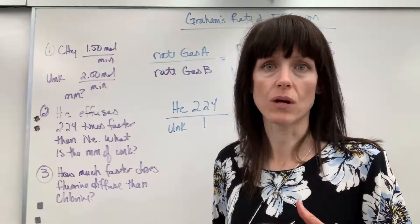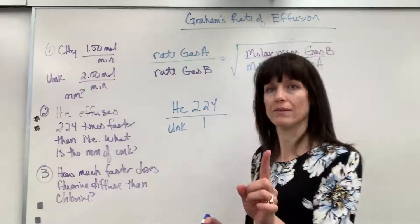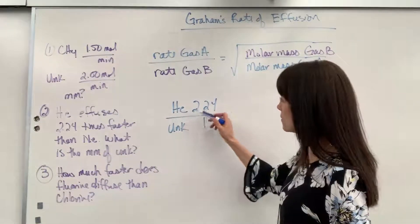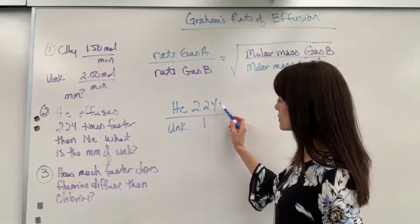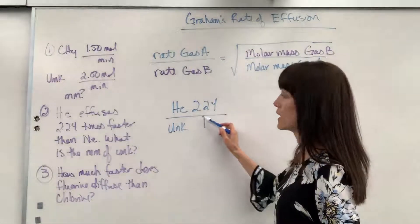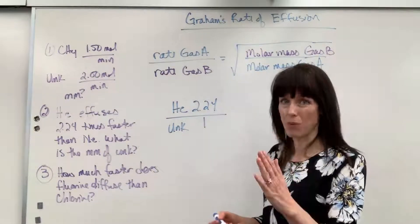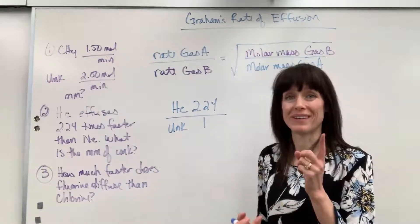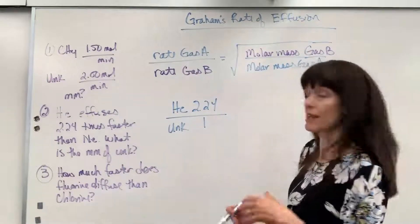So, if you're ever given just one number, faster or slower, you're comparing it to one. That's what's inherent. You're comparing it to one. So, this helium effuses 2.24 times faster than the unknown, which means the unknown is our reference of 1. So, there you have it. You always reference it to one if they only give you one rate.